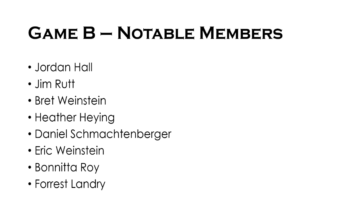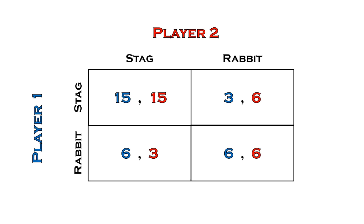To put this Game A, Game B distinction into context, let's start with a cooperative dynamic. On screen is a game theory matrix of an example called the stag hunt. Each individual or player has the option to either hunt a rabbit or a stag. If the two players both hunt for the stag in a cooperative fashion, their success rate goes up drastically, and their payoff will be much greater than had they acted alone. This payoff is win-win, and the point is to illustrate the real conditions in which we exist — we're far better off working together.